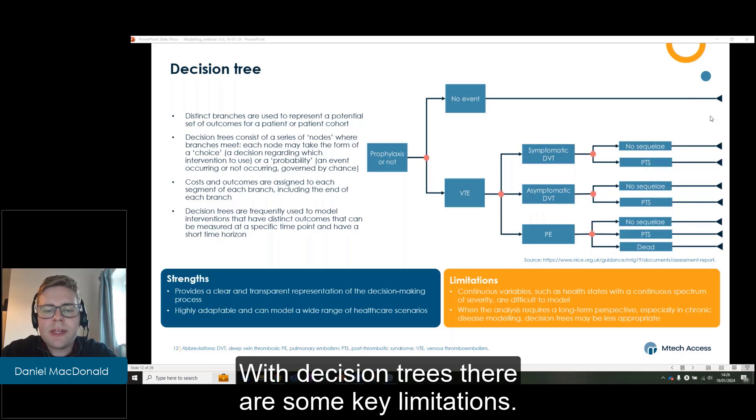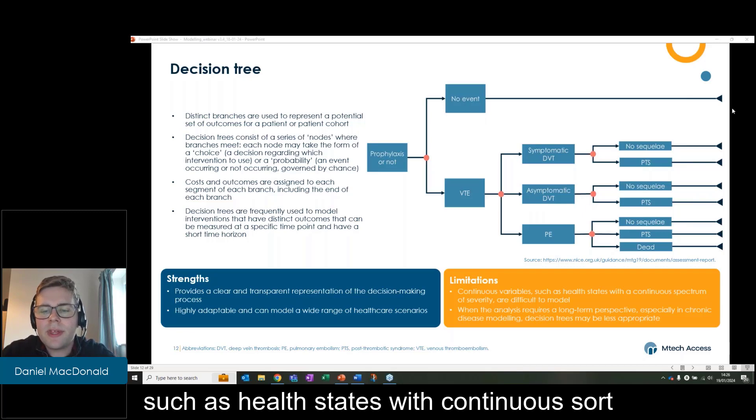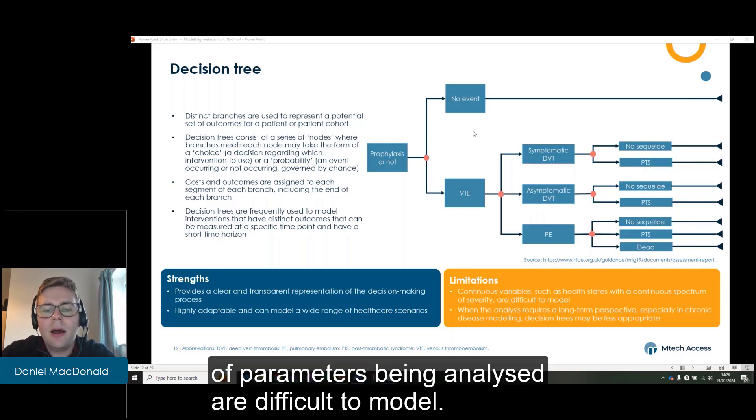With decision trees, there are some key limitations. The first one being that continuous variables, such as health states with continuous parameters being analyzed, are difficult to model.